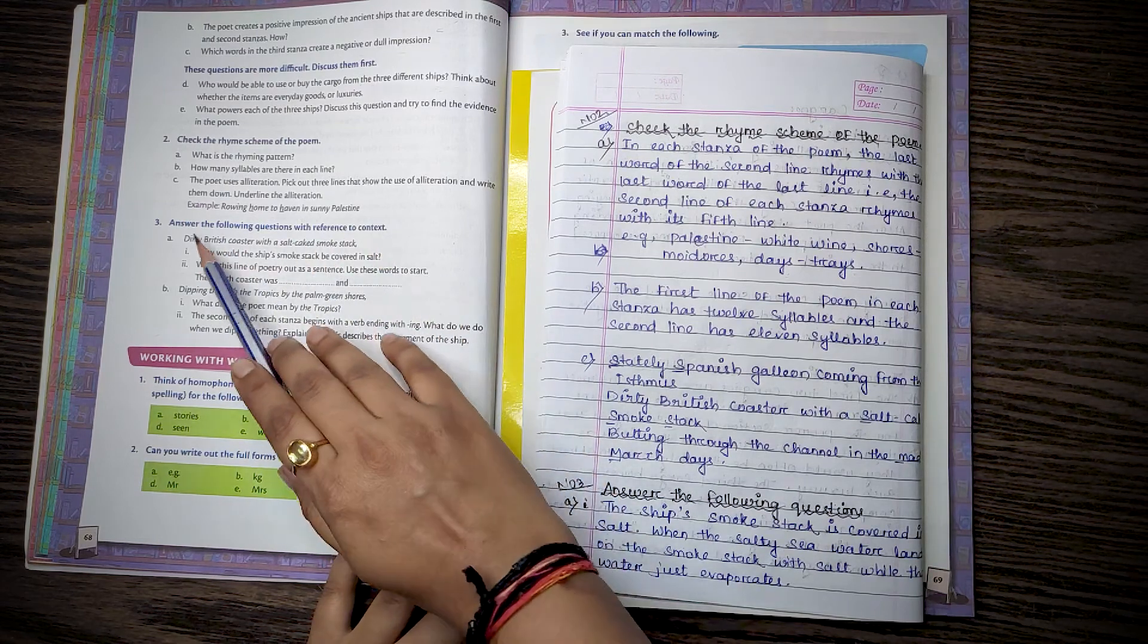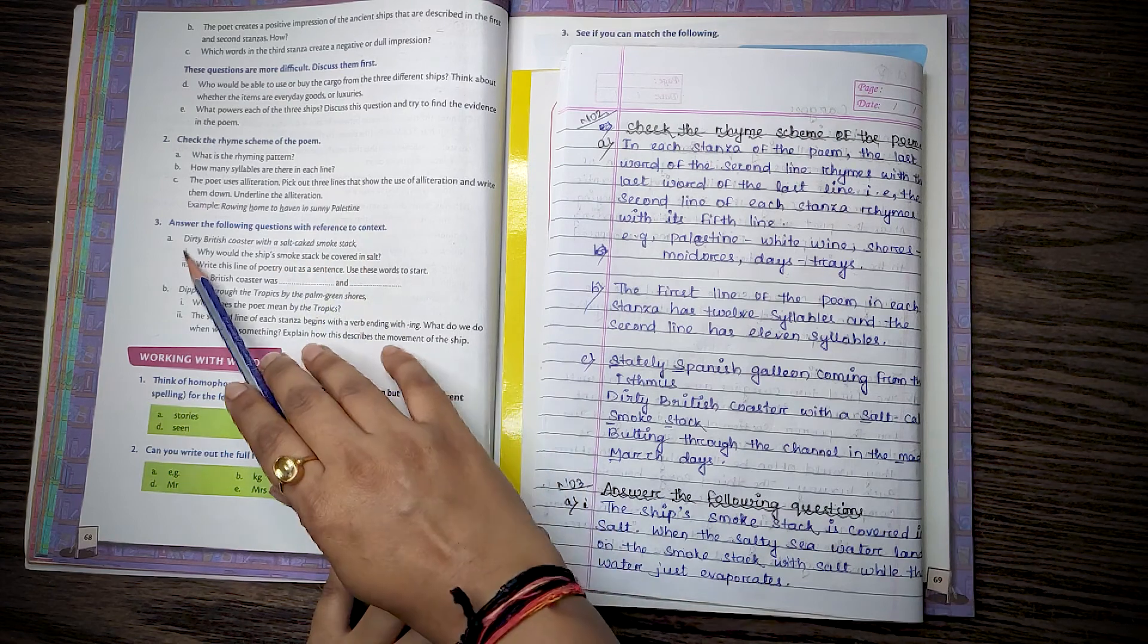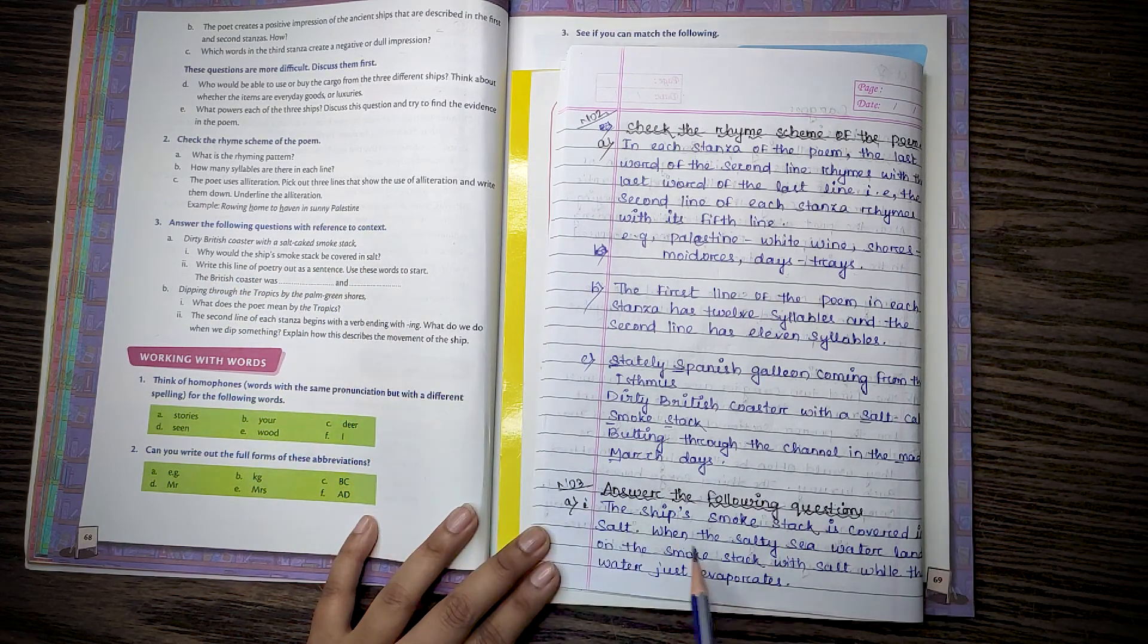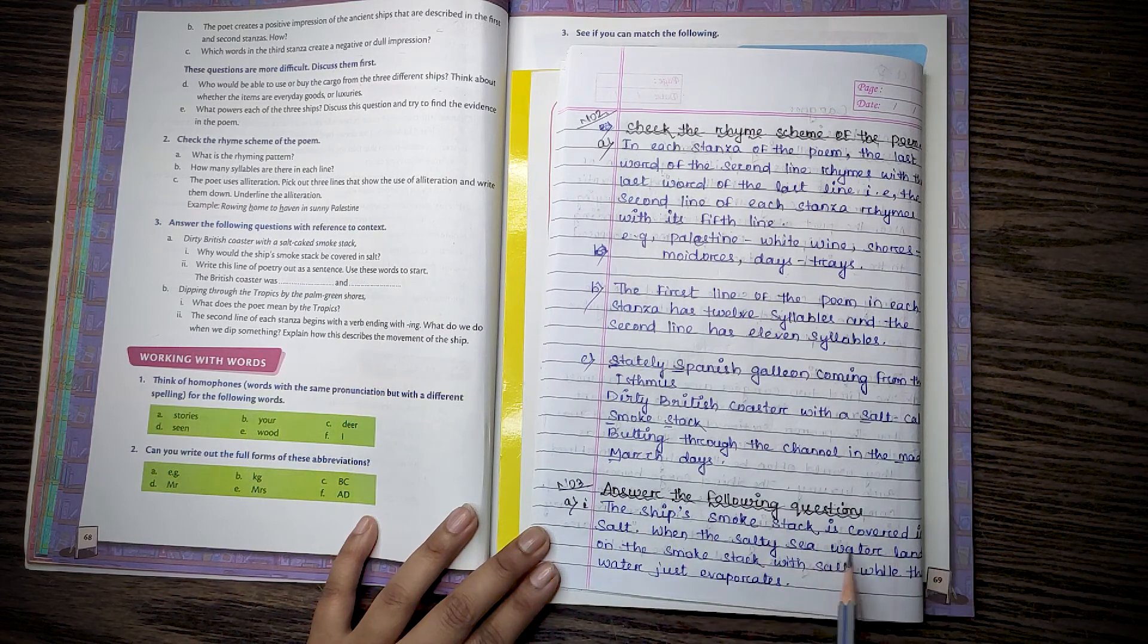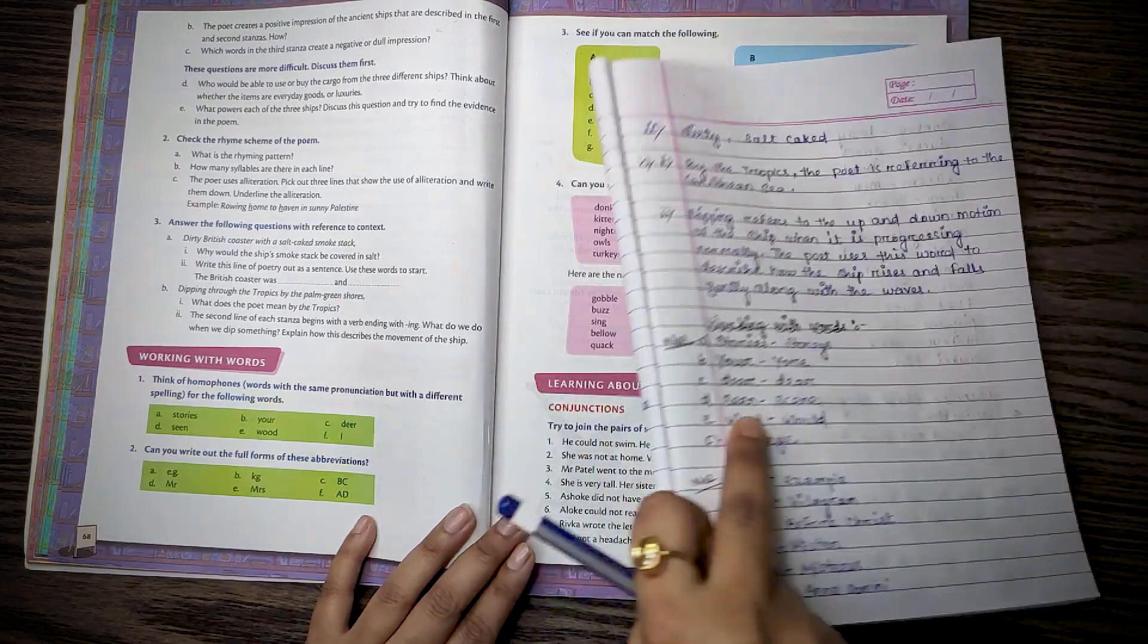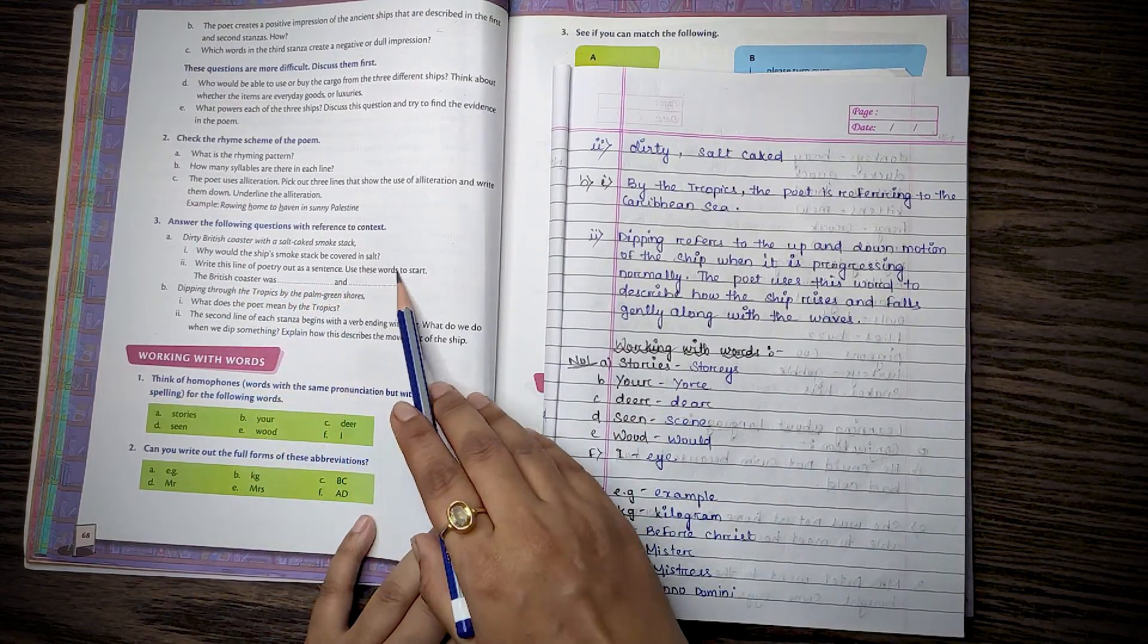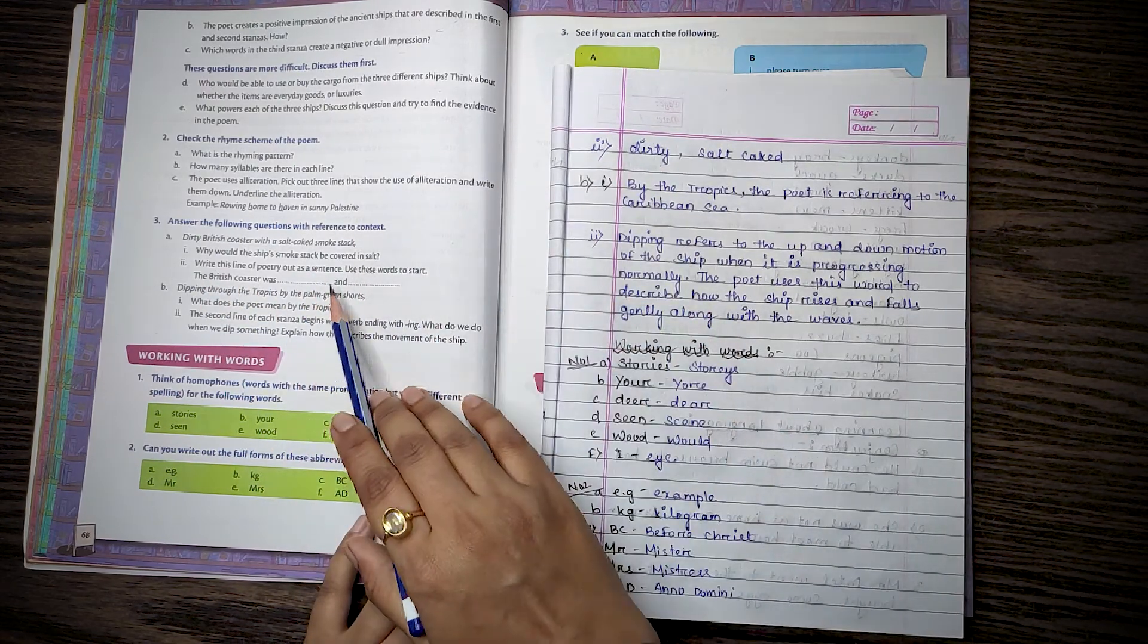Okay, and number 3. Answer the following question with reference to context. A. Dirty British coaster with the salt caked smokestack. Why would the ship's smokestack be covered in salt? The ship's smokestack is covered in salt when the salty sea water lands on the smokestack with salt while the water just evaporates. Then second, write this line of poetry out of the sentence. Use this verse to start. The British coaster was dirty and salt caked.